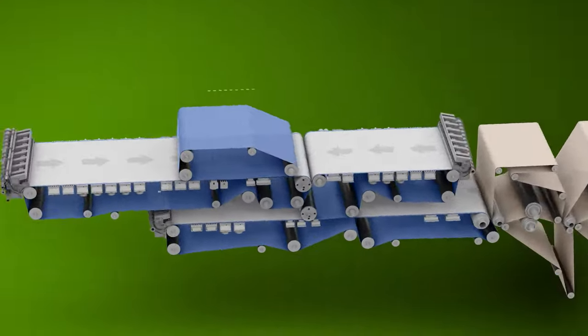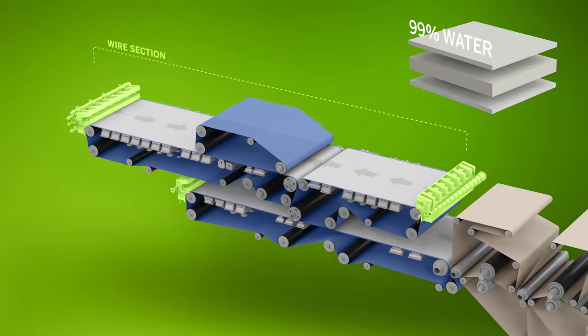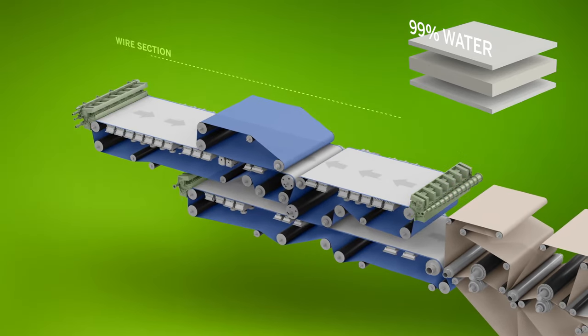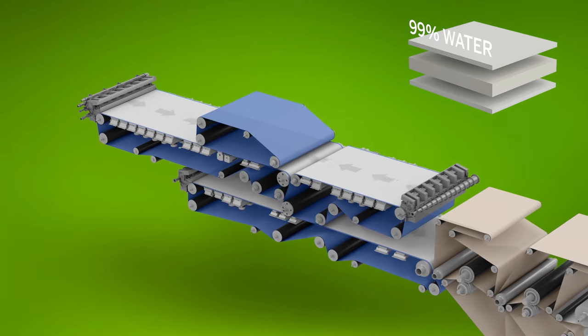At what we call the wet end of the board machine, fiber slurry is sprayed from three head boxes onto three separate wires. This slurry, called stock, is 99% water and 1% fiber.